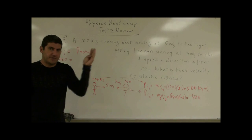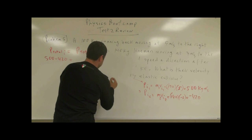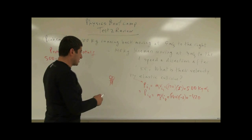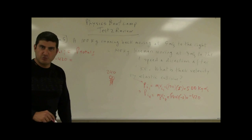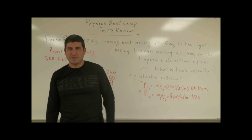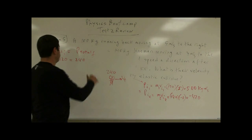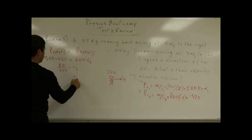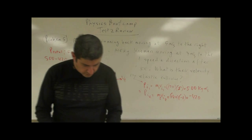After the collision, since it's a perfectly inelastic collision, they stick together. Their combined mass is 100 + 140 = 240 kg. They'll still be moving to the right because the running back's momentum (500) is larger in magnitude than the lineman's (−420). So 80 = 240 × v_final, giving v_final = 80/240 = 1/3 ≈ 0.333 meters per second.